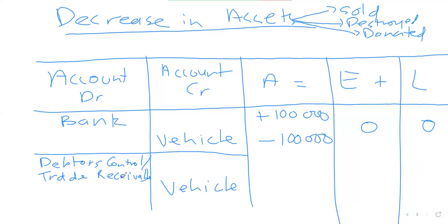Trade receivables simply means we've opened an asset account reflecting that somebody still owes you money and will repay at a later date. People that owe a business money are called debtors or trade receivables. Selling on credit means we expect repayment in future, so we open the debtors control account which we debit. We debit debtors control and credit vehicle. For the debtors control, assets increase by the value sold — 100,000.